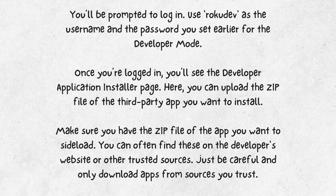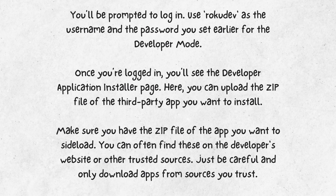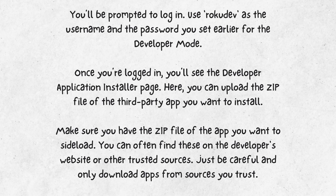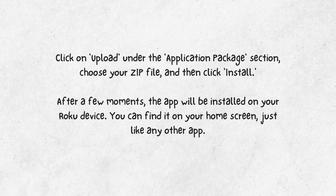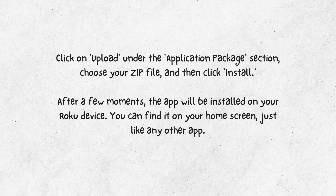Make sure you have the zip file of the app you want to sideload. You can often find these on the developer's website or other trusted sources. Just be careful and only download apps from sources you trust. Click on Upload under the Application Package section, choose your zip file, and then click Install. After a few moments, the app will be installed on your Roku device.